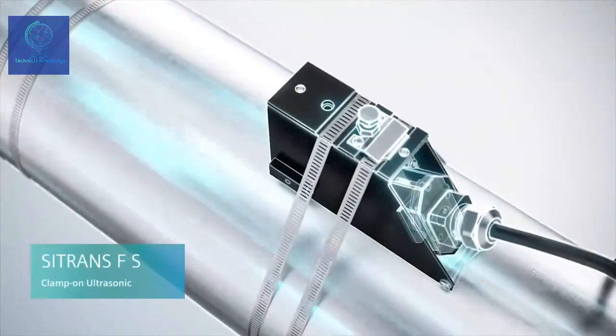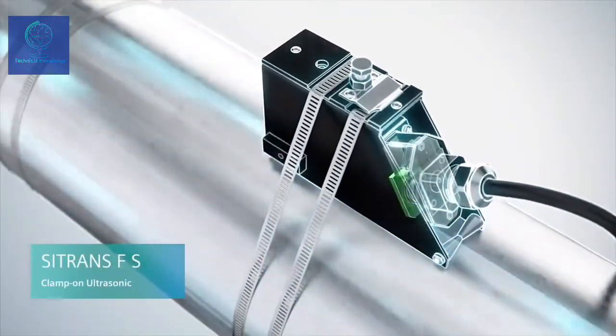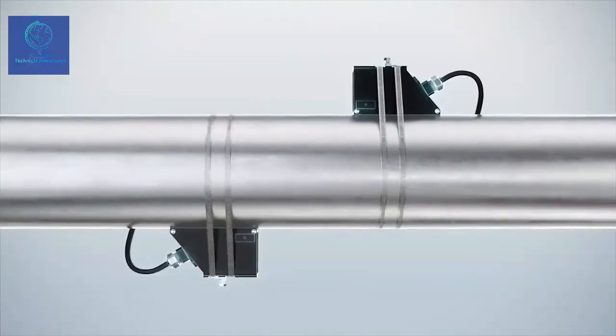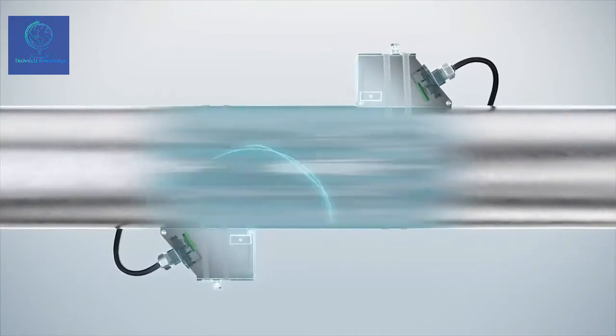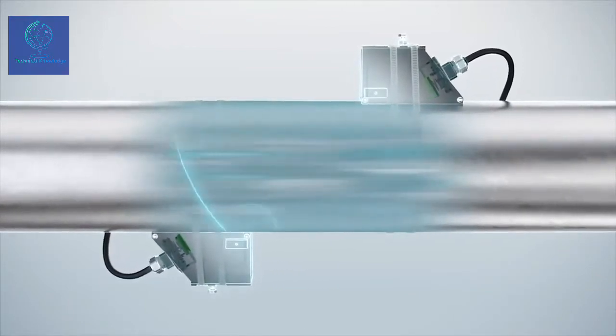The clamp-on version, however, uses sensors that are mounted on the outside of the pipe. Ongoing processes are not interrupted and the sensors never touch the medium.